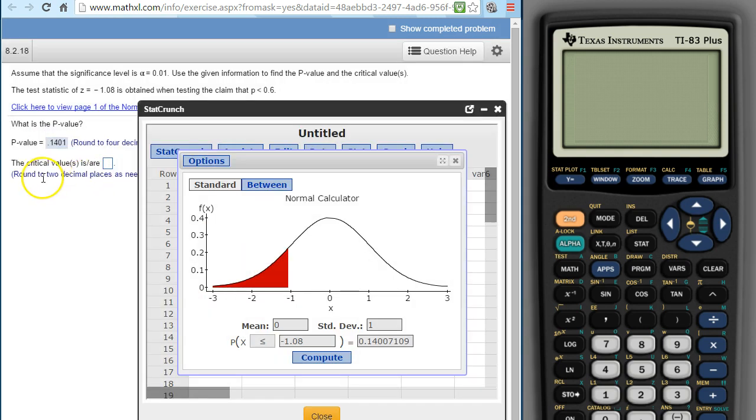All right, now what's the critical values? The critical values are determined by alpha.